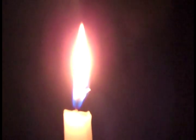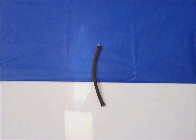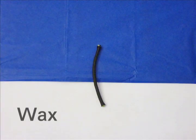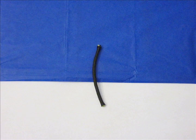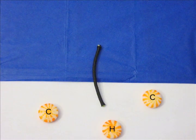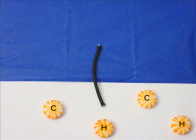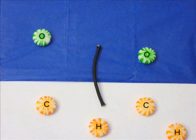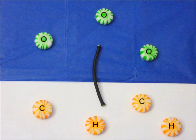Like everything else in the world, candle wax is made of tiny particles called atoms. The wax that creeps up a candle's wick is full of carbon and hydrogen atoms. The air around it is full of oxygen atoms.